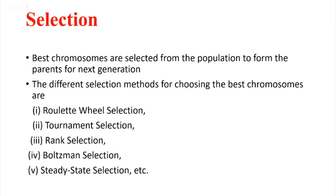After population, the next step is selection. You have chosen a population and now you have to select some individuals from them. There are different techniques: the most common is Roulette Wheel Selection. Others include Tournament Selection — conduct a tournament among two groups and choose the best; Rank Selection — evaluate everyone, put a rank, then select; and Boltzmann Selection — based on thermal equilibrium, using the probability function of energy in a thermal system.